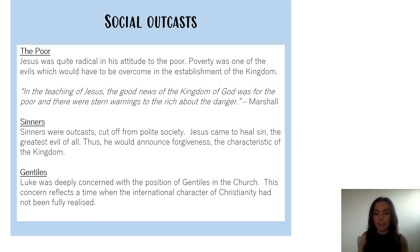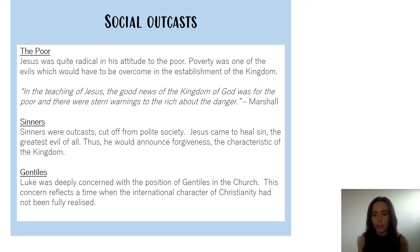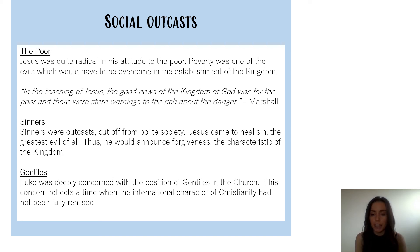The final theme is that of social outcasts — ultimately the idea that the kingdom of God is not exclusive to certain people, but actually open to all if they are willing to repent and be righteous, so you can draw links between the different themes. Outcasts that appear in the Gospel of Luke include the poor, sinners and Gentiles. Luke is quite radical in his attitude towards the poor, in that poverty is considered an evil that needs to be overcome in order for the kingdom of God to be established. A scholar named Marshall says, 'in the teaching of Jesus, the good news of the kingdom of God was for the poor, and there were stern warnings to the rich about the danger.'